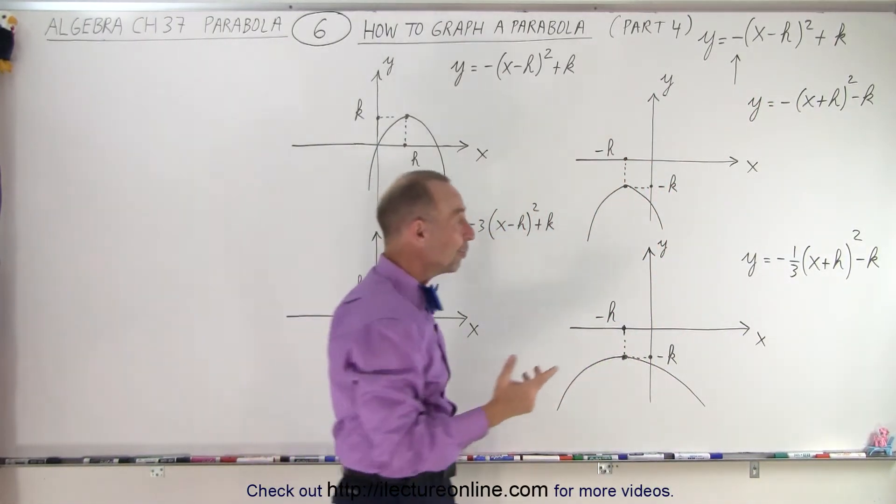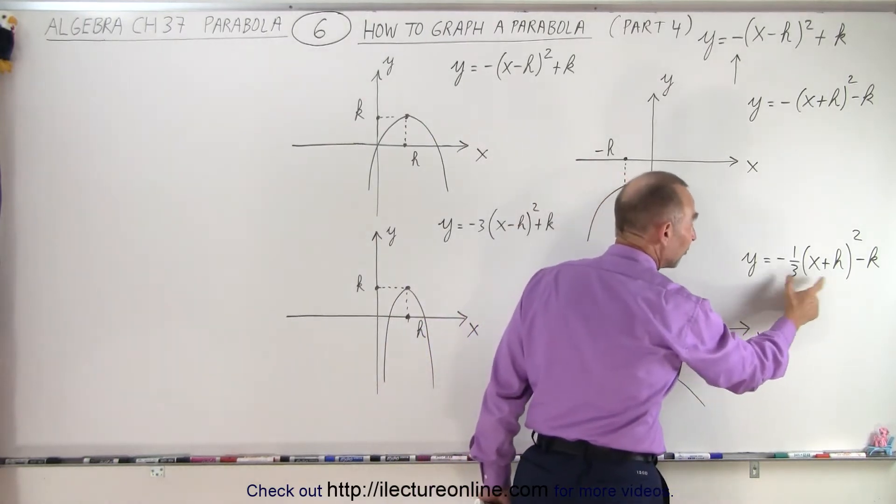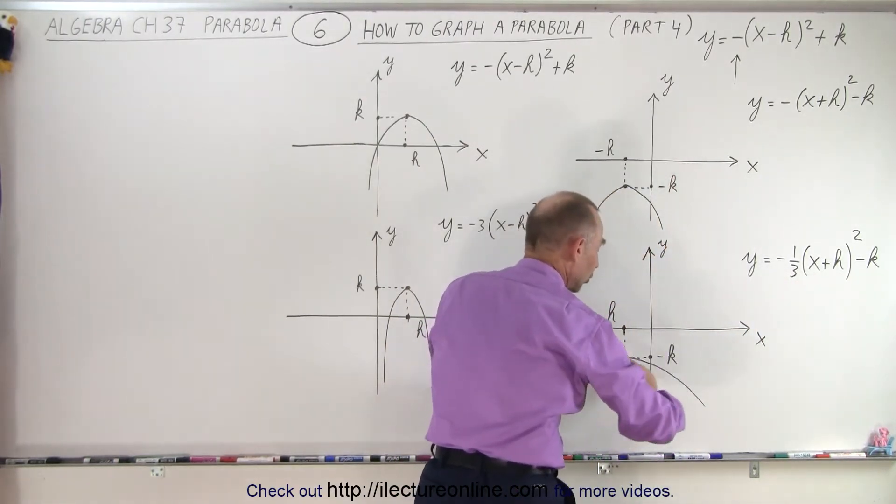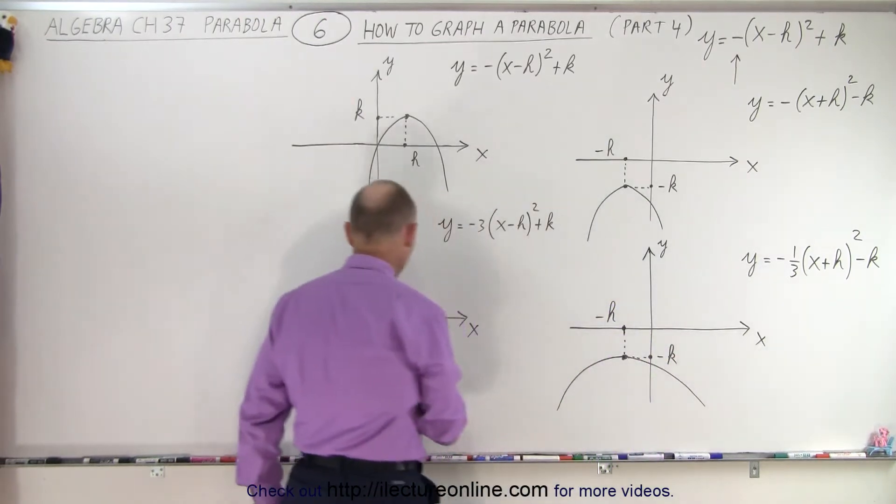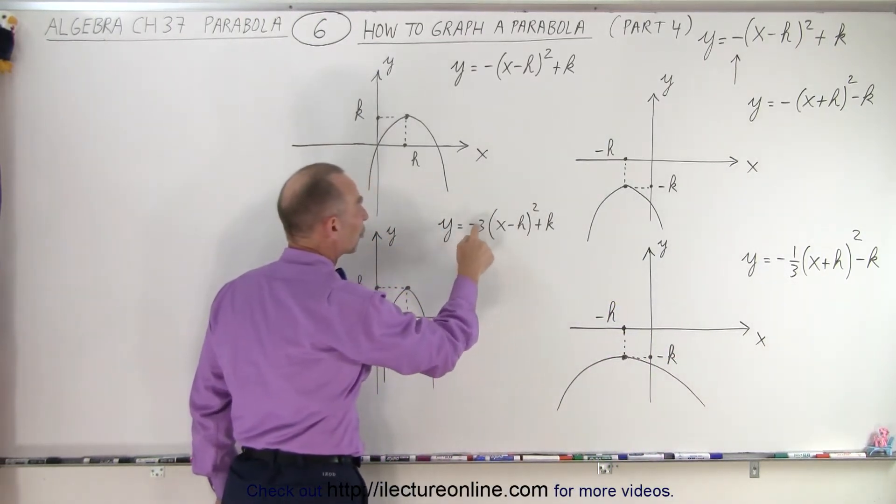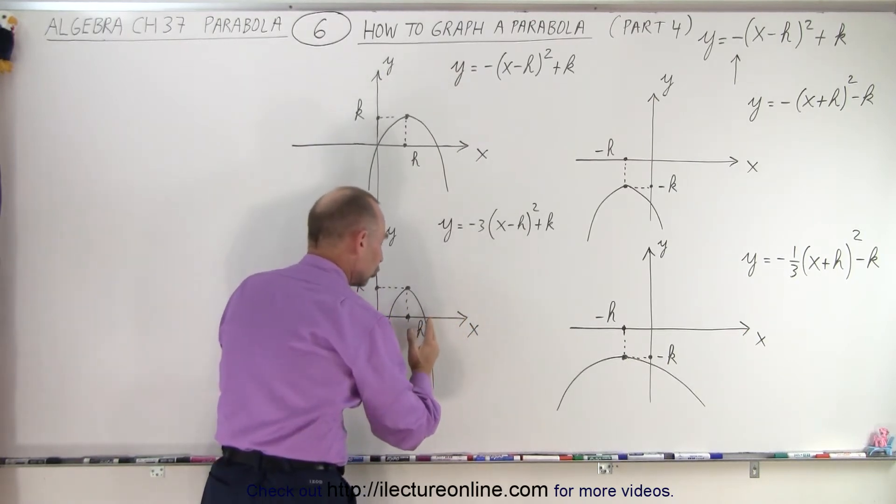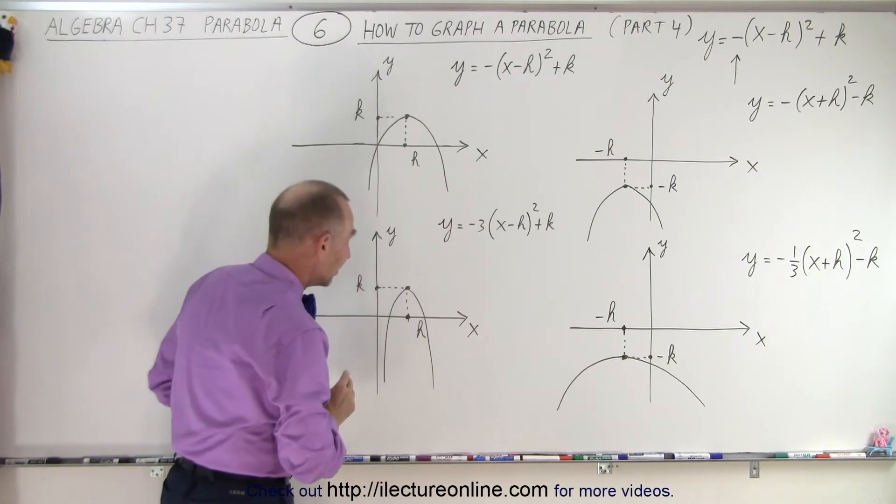And then, of course, if we have a constant other than 1 in front of the parentheses, like minus 1/3, it causes the parabola to widen. And in this case, we have Y equals negative 3 times (X minus H) squared. That makes the parabola become skinnier, less wide.